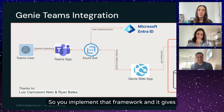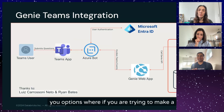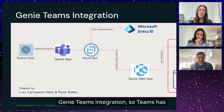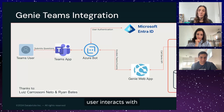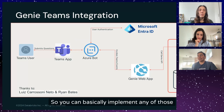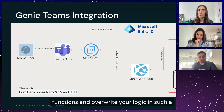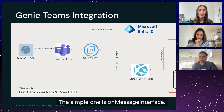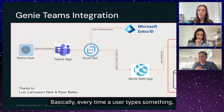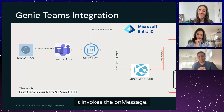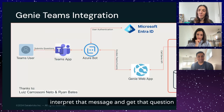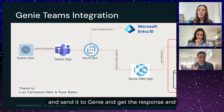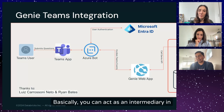Microsoft has the Bot Builder framework. You implement that framework and it gives you options for Teams integration. Teams has different events which it emits every time a user interacts with it, like on-message activity or on-team-user-join activity. You can implement any of those functions. The simple one is on-message — every time a user types something, it invokes the on-message handler, so you can interpret that message, send it to Genie, get the response, and send it back. You act as the intermediary in between.